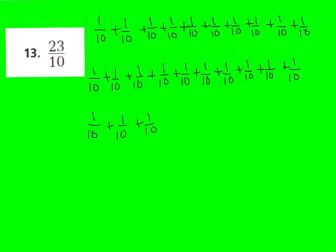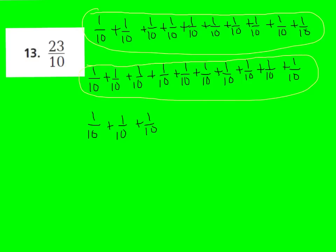Number 13: 23 tenths — I need to change that to a mixed number. I have 1 tenth as unit fractions, 23 times. I make groups of 10 tenths since 10 tenths equals a whole. I get two complete groups of 10, making 2 wholes, with 3 tenths left over. So my mixed number is 2 and 3 tenths. Using division: 23 divided by 10 is 2 with 3 tenths left over.